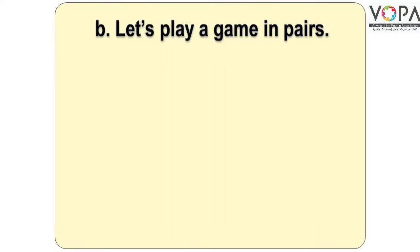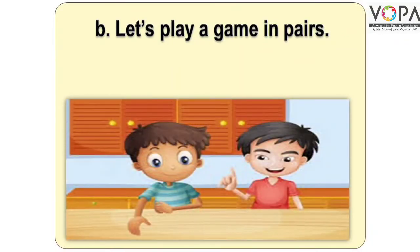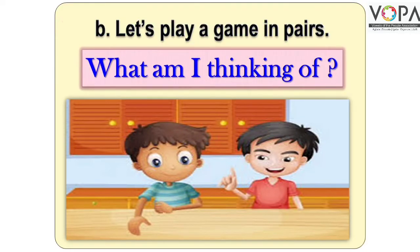Point B: Let's Play a Game in Pairs. प्यारे बच्चों, आओ अब हम लोग जोड़ियाँ बनाकर एक गेम खेलते हैं. यहाँ दो बच्चे बताए गए हैं — एक का नाम है अभय और एक का नाम है भुशन. अभय भुशन से कहता है: What am I thinking of? मैं क्या सोच रहा हूँ? मुझे बताओ.